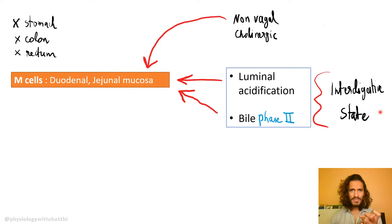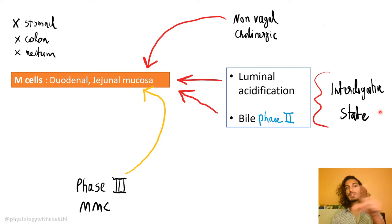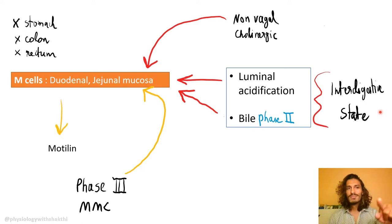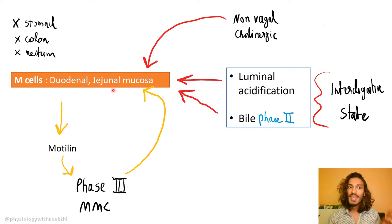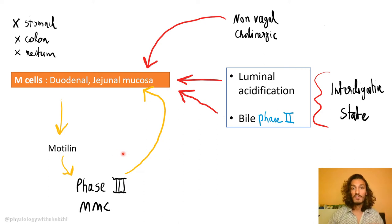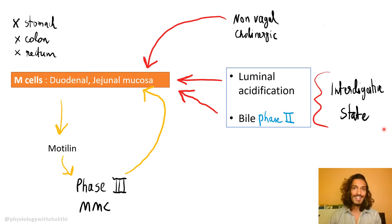Interestingly, Phase three MMC by itself stimulates motilin release from M cells, and motilin in turn induces Phase three — creating a feedback loop. This raises the classic 'chicken or the egg' question: is motilin the primary driver of Phase three MMC, or is Phase three raising motilin levels as a feedback mechanism?